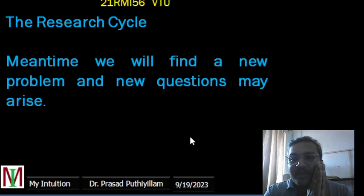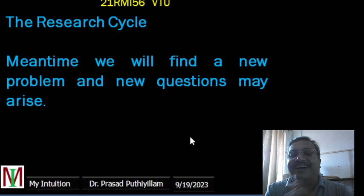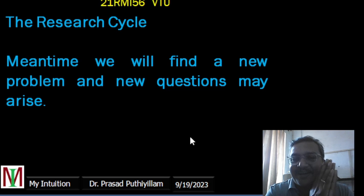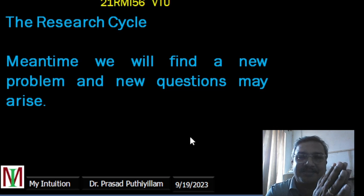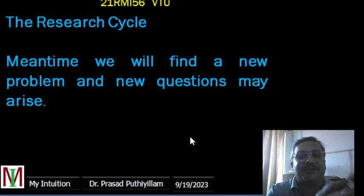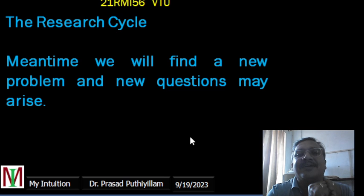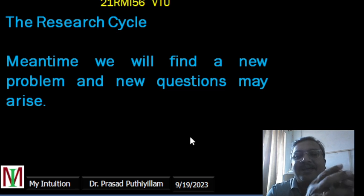The research cycle continues until your research guide says your work is more than enough for a degree, or when you need a break. But a true researcher will always come back to it — it becomes a habit. You keep doing it, or you give your work to research scholars who continue it while you stay involved in checking how it works. Research is a cyclic, continuous work.